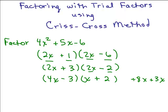If you switch the plus and minus sign, this actually will give you the correct factorization. This is a trial factors method — you just try different combinations and then verify using the FOIL method to make sure you get 4x squared plus 5x minus 6. In this particular problem, this is the answer. So that's just a quick review of trial factors.